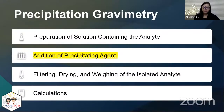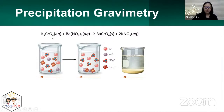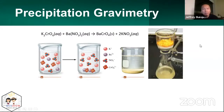For example, if you want to measure the percent barium in a solution of barium nitrate, you mix it with potassium chromate as your precipitant. What you get is a yellow precipitate — barium chromate — and potassium nitrate as products, based on a double displacement reaction between potassium chromate and barium nitrate.